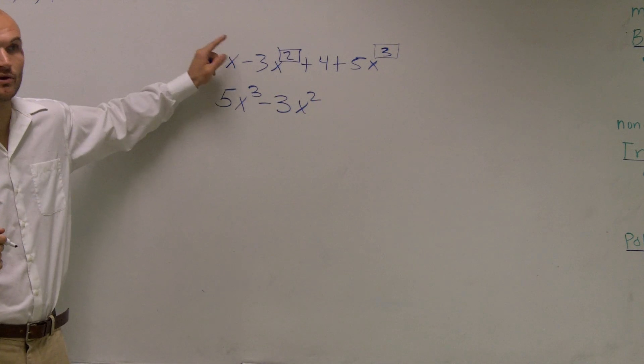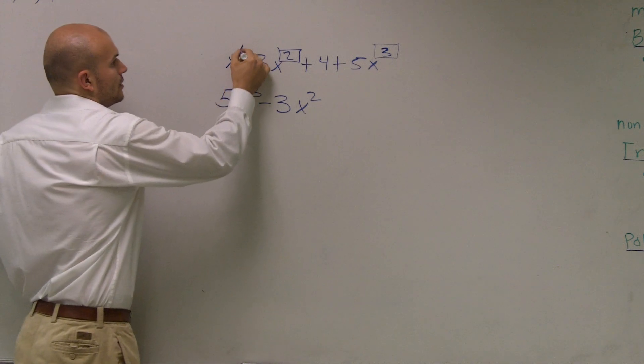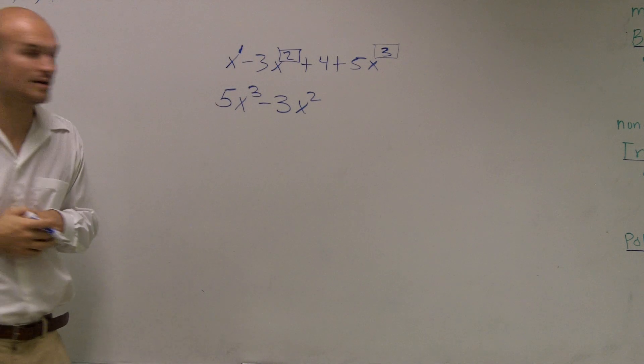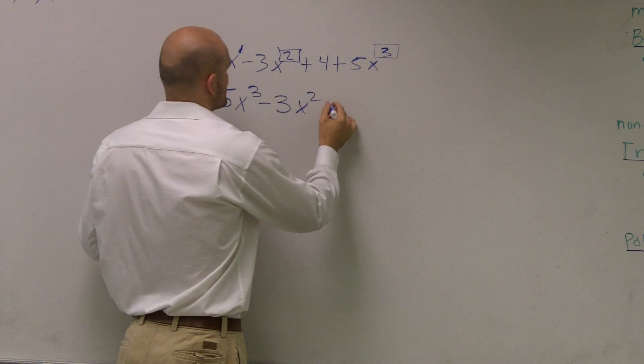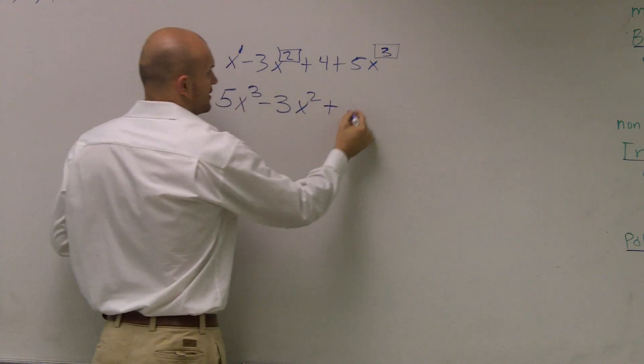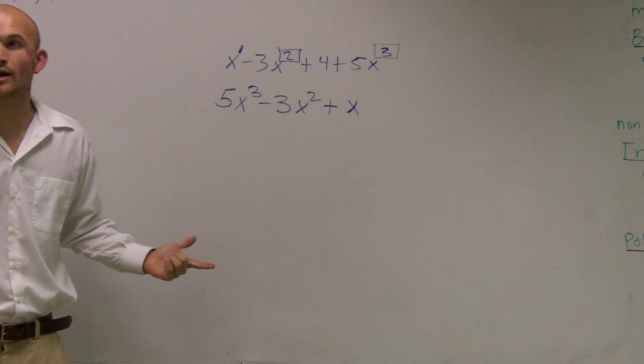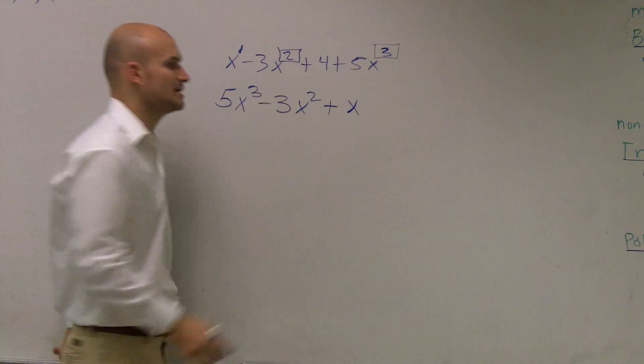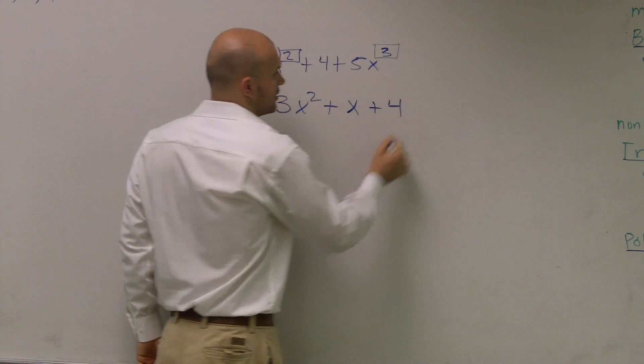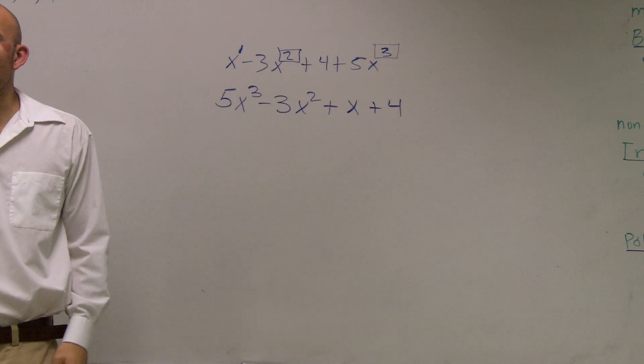Then, if there's no exponent up there, we know there can be a 1 up there. So then the next one becomes plus, since it's a positive. It's plus x. I don't need to write the 1 up there. You can if you want to. And then the last one is going to be always your constant, or your number without variables, 4.